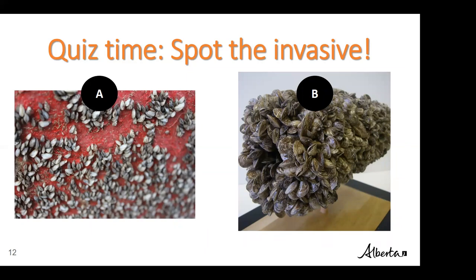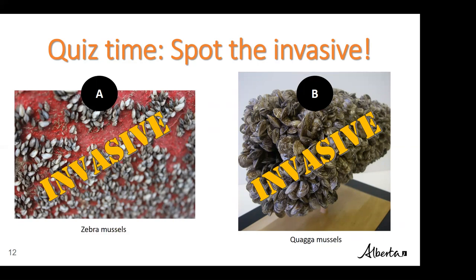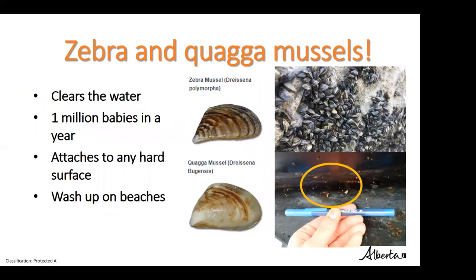For our next quiz, both A and B are actually invasive! On the right we have Quagga Mussels and on the left, Zebra Mussels — both invasive across Alberta and Canada. They are very invasive because they are filter feeders, clearing up to a liter of water per day per mussel. When the water becomes too clear, aquatic plants dominate while fish and plankton decline, disrupting the balanced ecosystem. Zebra and Quagga Mussels can also produce up to one million eggs per year per female.